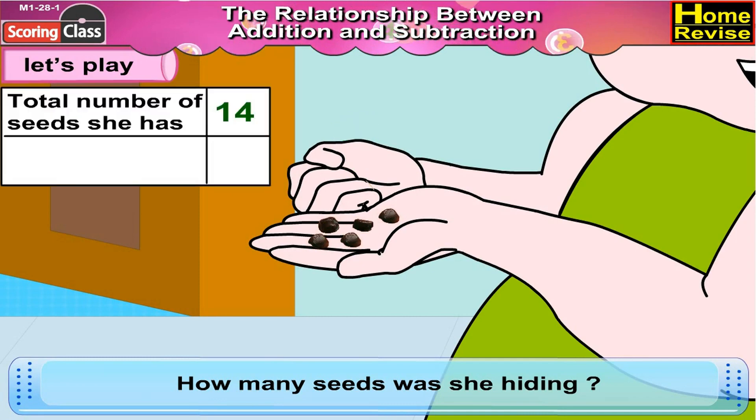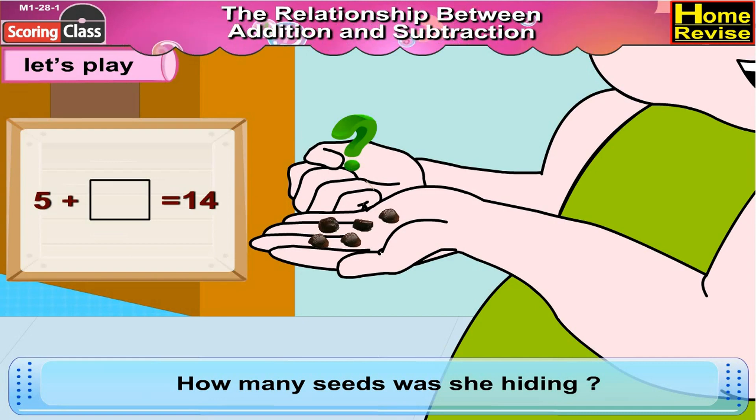Now children, you know that total number of seeds she has is 14. And seeds which we can see are 5. Now 5 plus dash is equal to 14. So 5 plus how many is equal to 14?